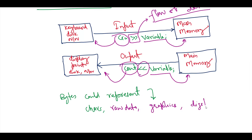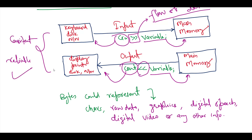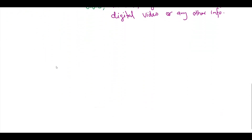An application associates meaning with the bytes — the byte could represent characters, raw data, graphic images, digital speech, digital video, or any other information an application may require. The system IO mechanism should transfer bytes from device to main memory and vice versa, and this process should be consistent and reliable. The IO mechanism provides us all these facilities.